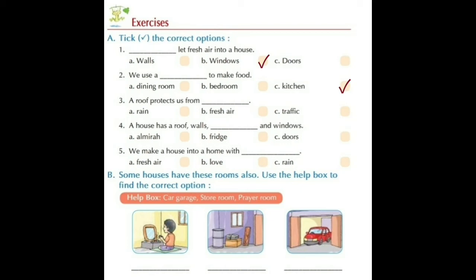Number three: A roof protects us from blank. Option A: rain, Option B: fresh air, Option C: traffic. A roof protects us from Option A — rain.